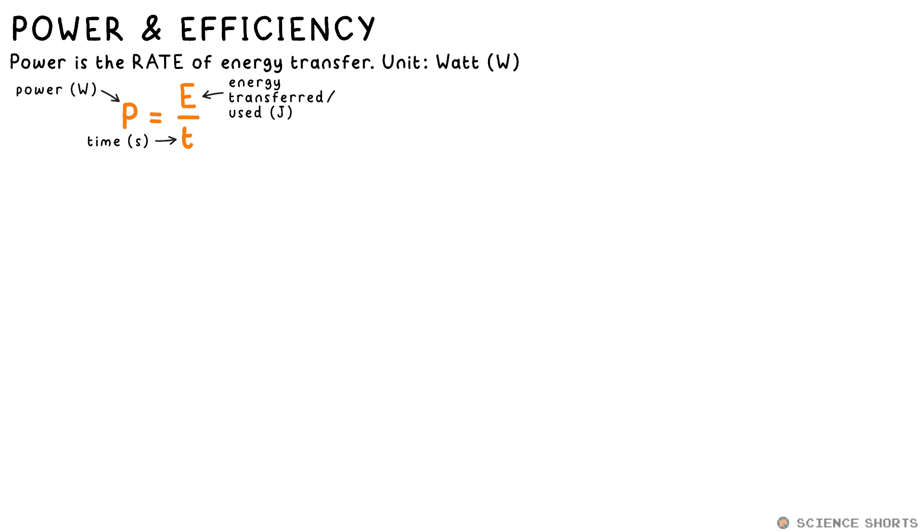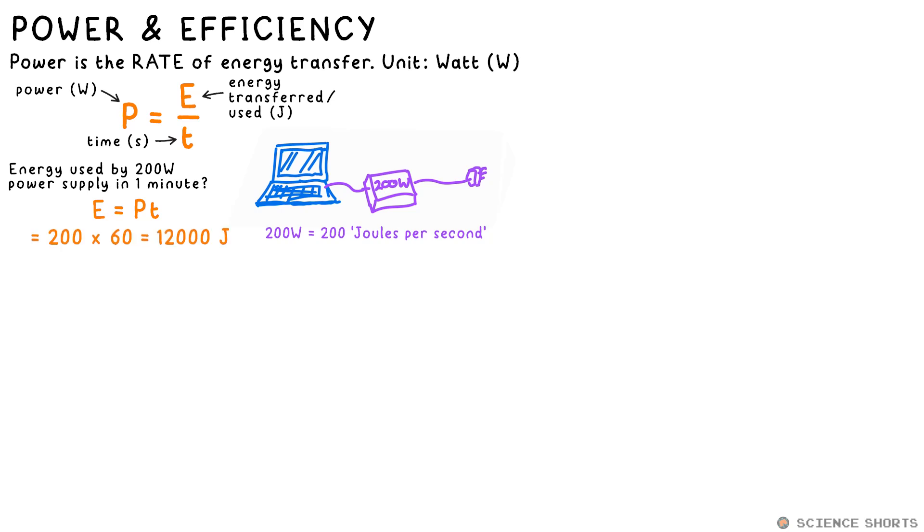The unit for power is W for watts, but this is just the same as joules per second. So my laptop has a 200 watt power supply, which just means that it uses 200 joules of energy per second. To find out how much energy it uses in a minute, we just rearrange this equation, so E is equal to P times T. So then that's 200 watts times 60 seconds.